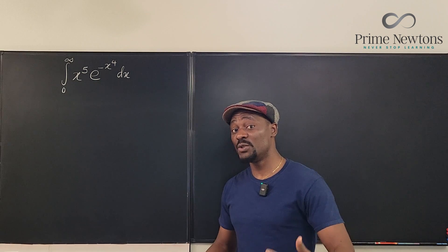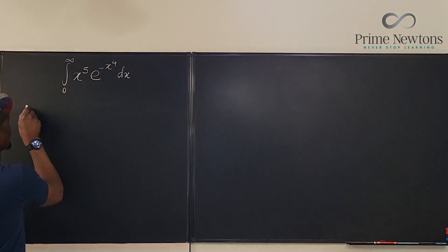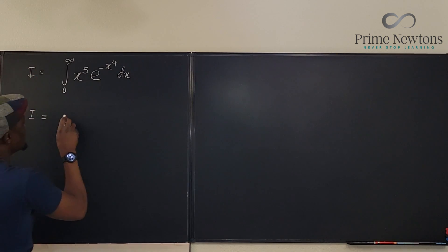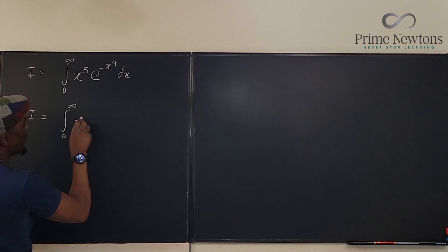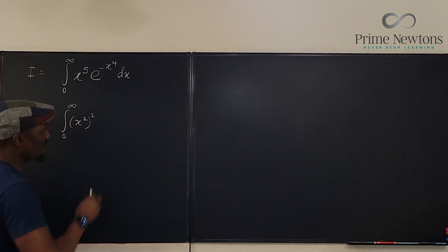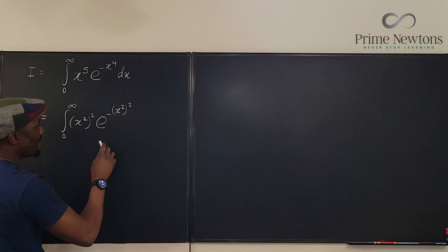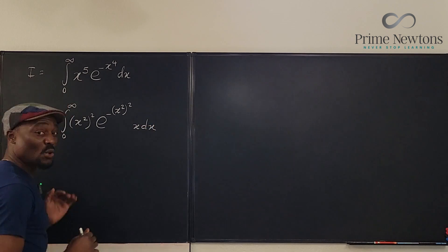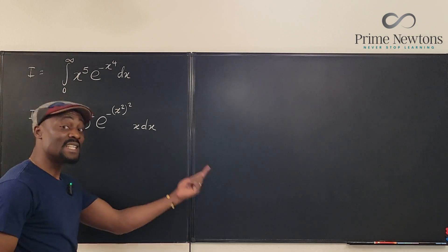To make what I'm about to do obvious, I'm going to rewrite this integrand. Let's call this I so I don't keep writing it. I can be written as the integral from zero to infinity of x to the fourth — I'm going to write it as (x²)² — times e to the negative (x²)², and the only thing missing is one x, so I'll put that x here: x dx.